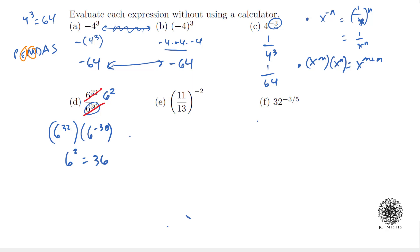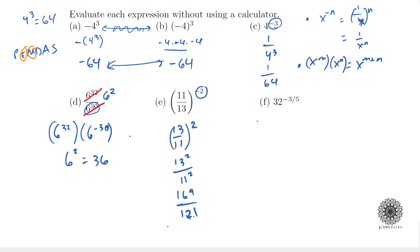For part e, we have a negative exponent on a fraction, so we take the reciprocal: (11/13)⁻² becomes (13/11)². Squaring a fraction means squaring the numerator and the denominator separately. 13² = 169 and 11² = 121, so the answer is 169/121.